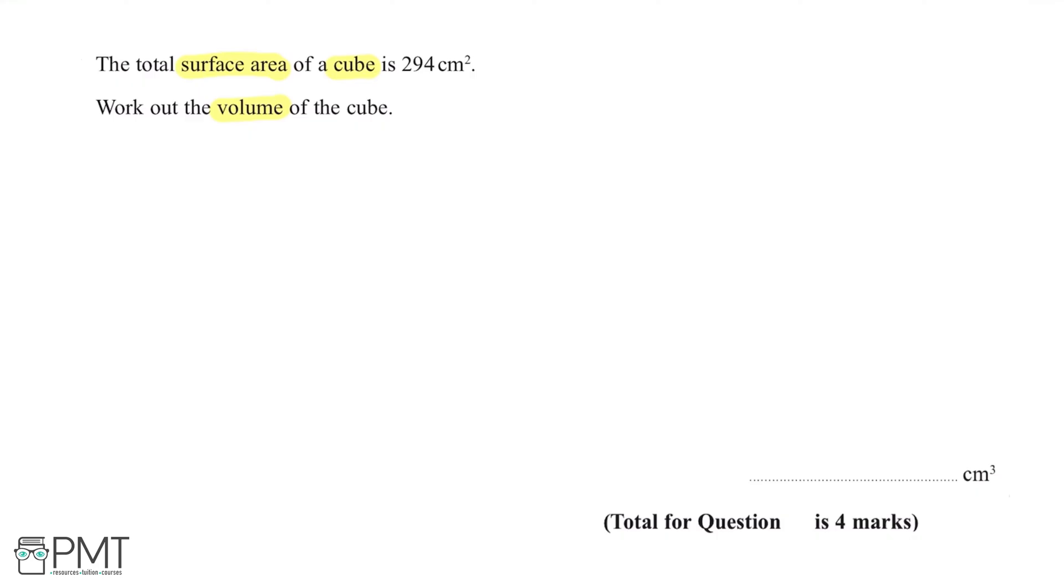A cube is a 3D shape which has equal lengths for every side. The formula for the surface area of a cube is 6 times by x² where x is the length of a side.